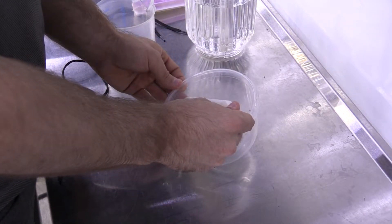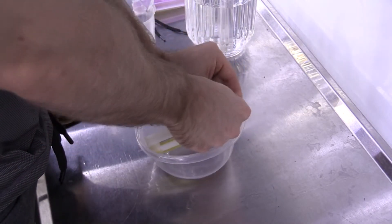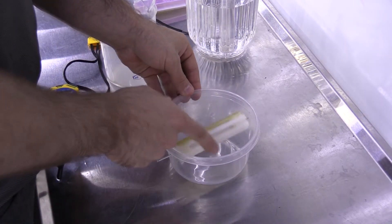Insert the axle with the water wheel attached into the two holes in the water collection bowl. Again, the wheel should spin freely.